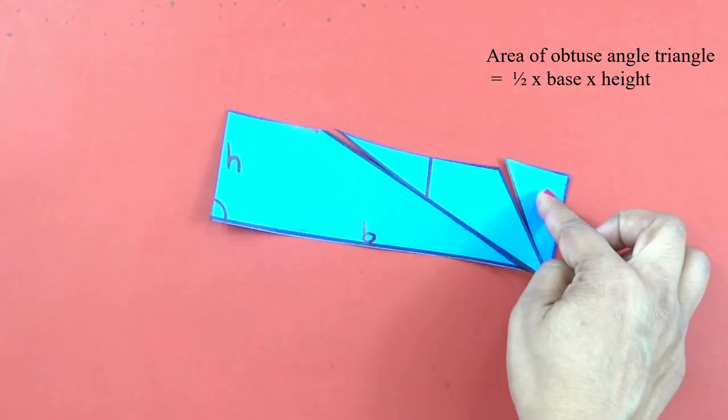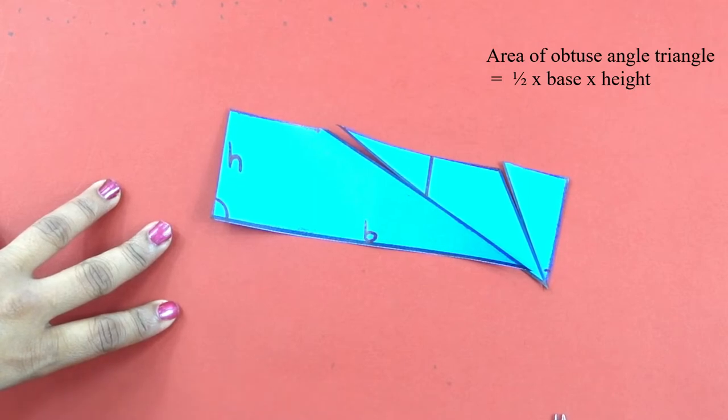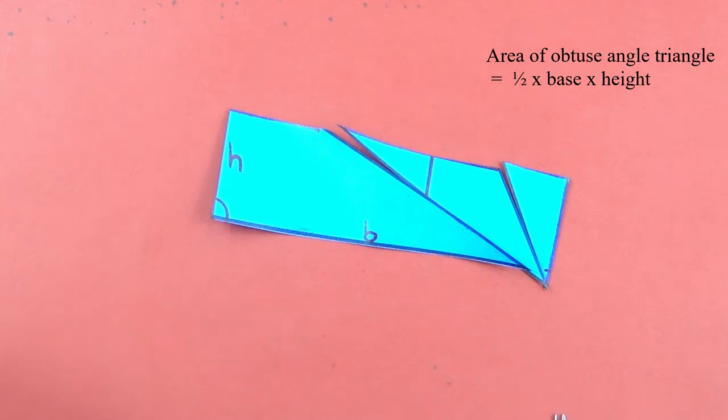So in this way we have proved in all the three cases that area of the triangle is given by the formula half base into height, which is correct.